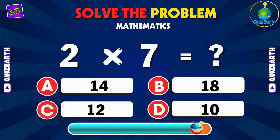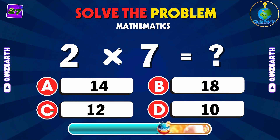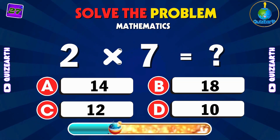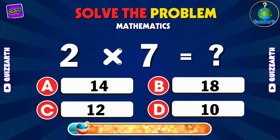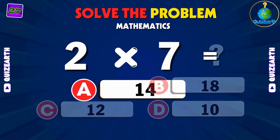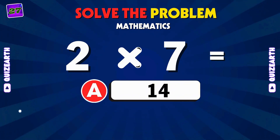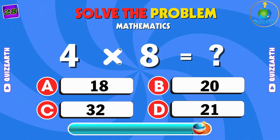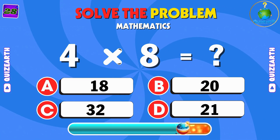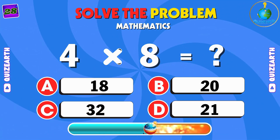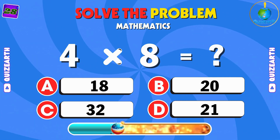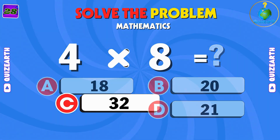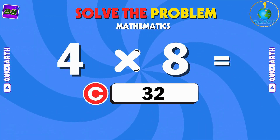Double up 7 twice — what's 2 times 7? A: 14. 4 multiplied by 8 — simple multiplication. C: 32.